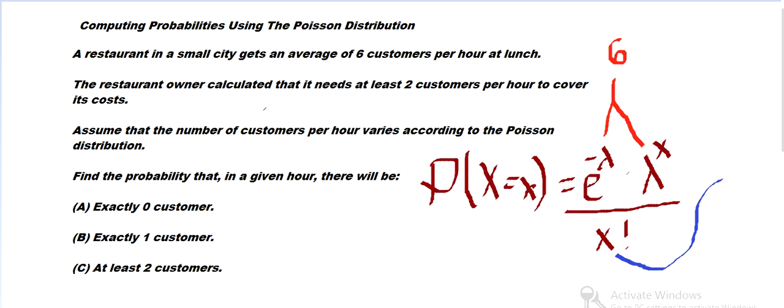We're going to start by calculating the probability that there is zero customers for a. And then we'll plug in. We've got e to the minus six times six to the zero over zero factorial. And we'll pop that in the calculator and get 0.00247.